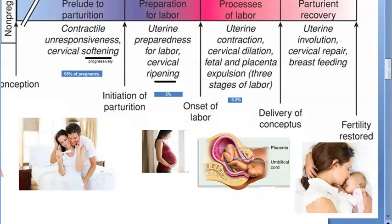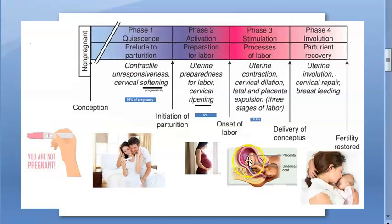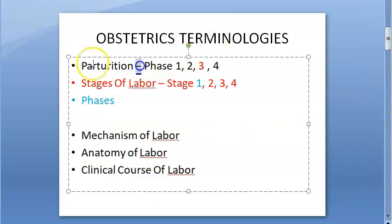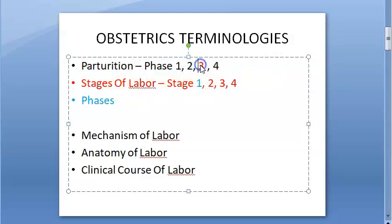The last phase of parturition is involution — cervical repair and breastfeeding. So parturition has phase one, two, three, four. In phase three — stimulation — you have the stages of labor: one, two, three, four.